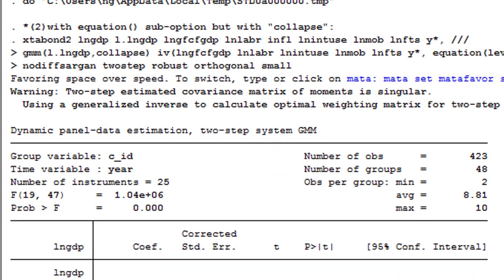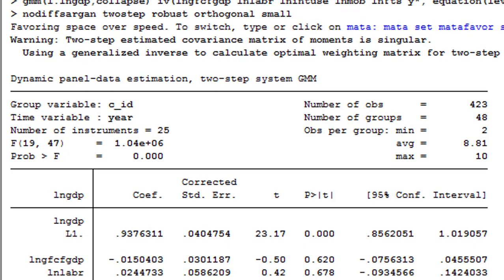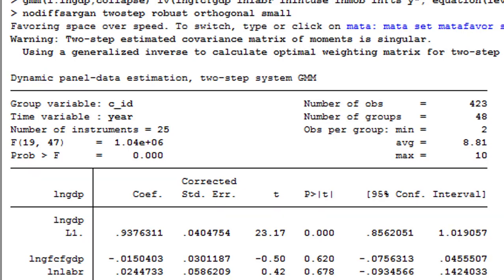You will observe after you are using your own data to follow my analysis, your results are almost similar to what you obtained using the one-step system GMM. The differences are just in the coefficients and in the AR2 statistic. Hansen's statistic from what I'm getting from my own analysis is exactly the same.